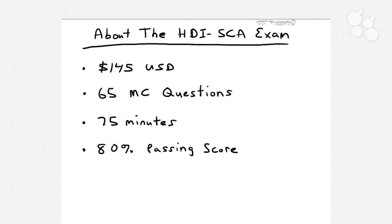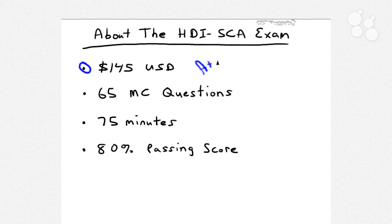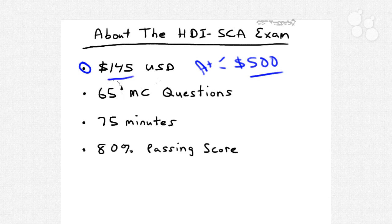The cost of the HDI SCA exam is a little bit more than, for instance, a Microsoft exam which goes for $125 USD, but it's cheaper than some CompTIA credentials — actually cheaper than just about all of theirs. The A+ computer repair credential, for instance, requires a couple of exams whose combined total is almost $500 USD. So the HDI SCA is just slightly higher than average in terms of certification exam costs.